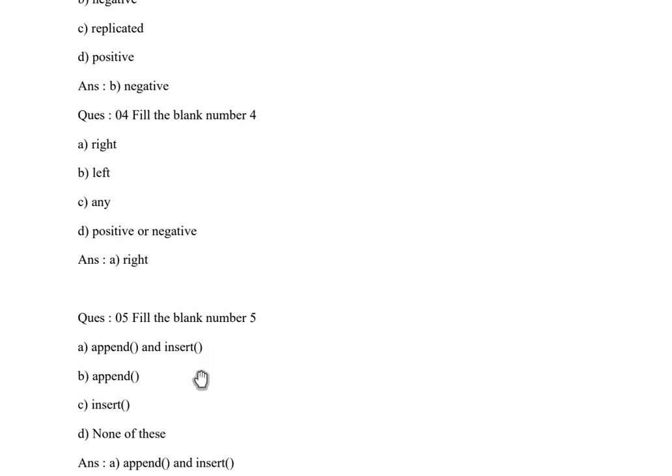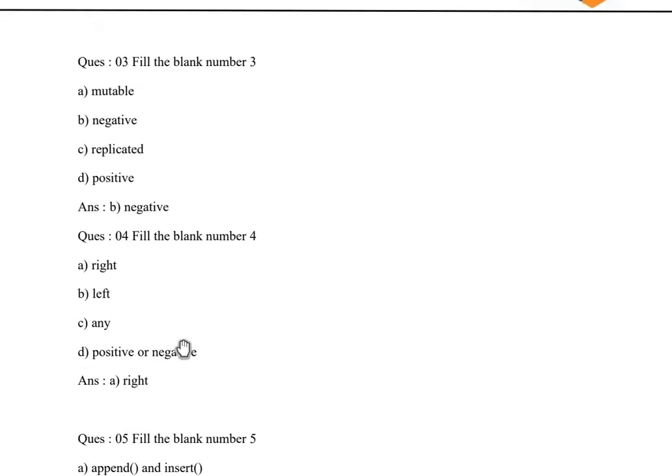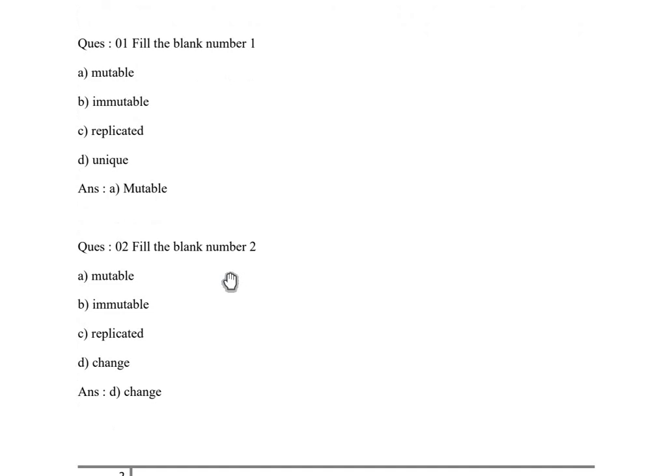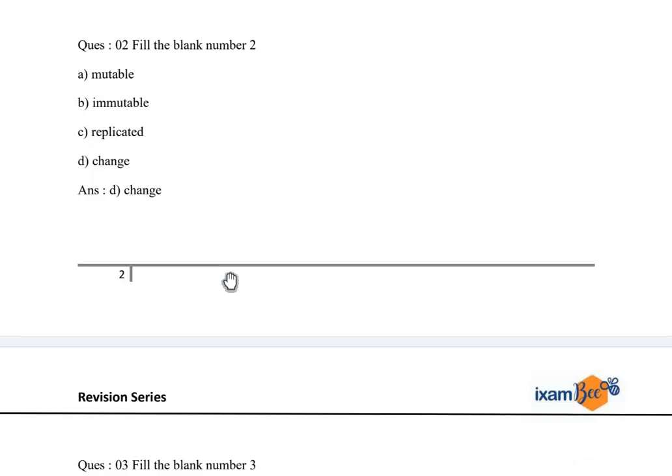For doing any operation, what kind of operations are provided in the list? The correct answer will be append and insert. If you are not sure about both these things, you either will take B or C, but both of them are correct, so A will be the correct answer. If you refill this particular thing in the fifth space, you will get it more clear. Python's insert and append methods can also add values to the list.